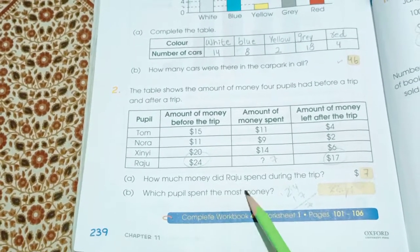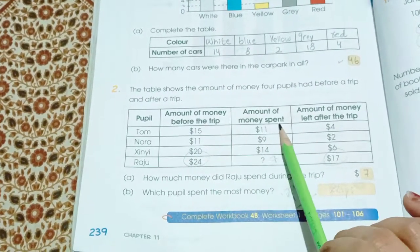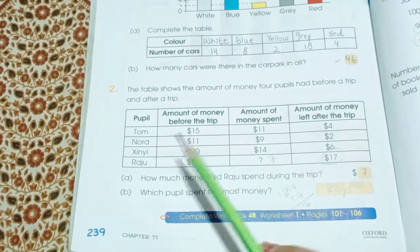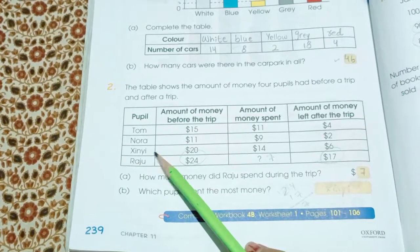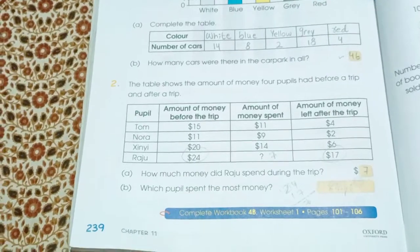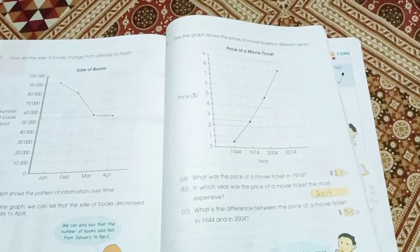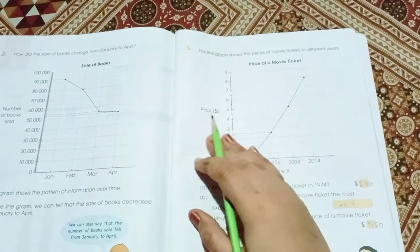Which people spent the most money? So who spent the most money? 14 dollars. Zinni. Zinni spent the most money. Now here on page number 242 we have the line graph.